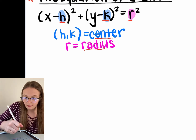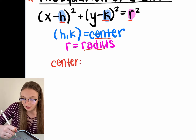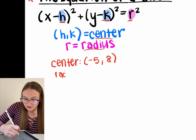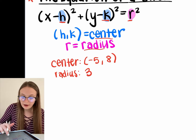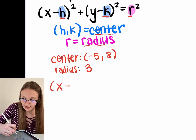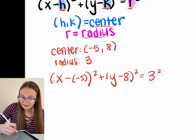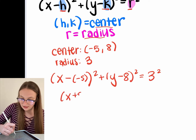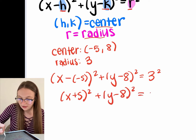Hypothetically speaking, if the center of a circle was negative five comma eight and the radius was three, we would plug it in as follows: x minus negative five squared plus y minus eight squared equals three squared. Simplifying, this becomes x plus five squared plus y minus eight squared equals nine.